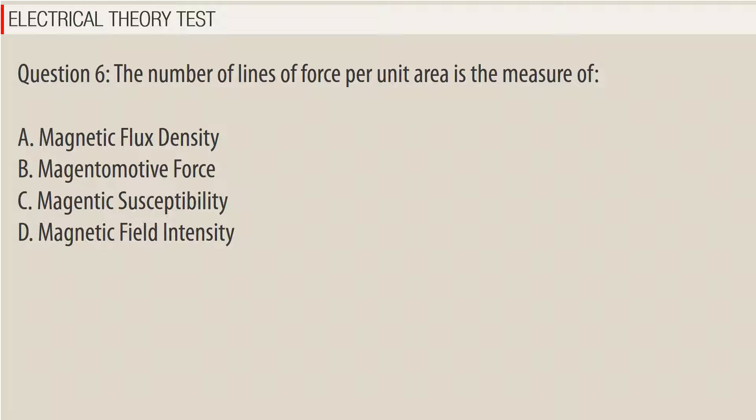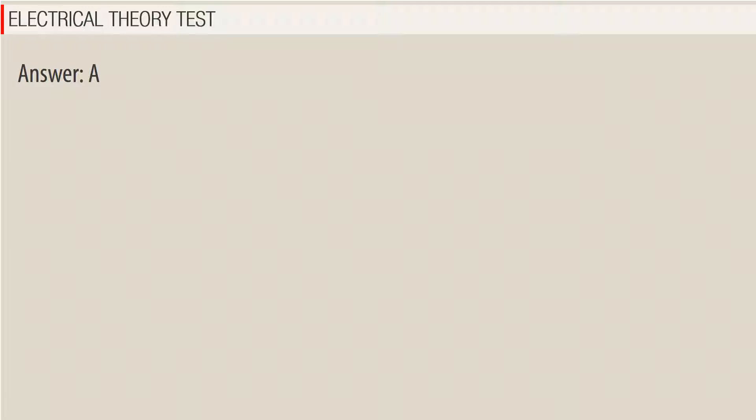Question 6. The number of lines of force per unit area is the measure of? a. Magnetic flux density. b. Magnetomotive force. c. Magnetic susceptibility. d. Magnetic field intensity. Answer: A.